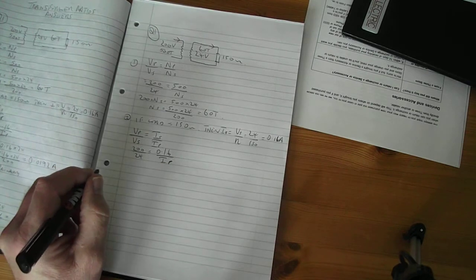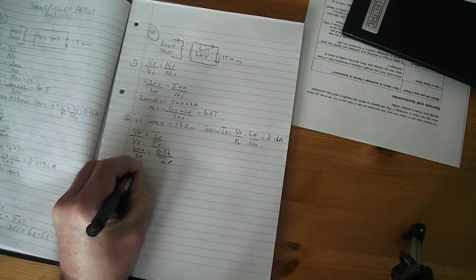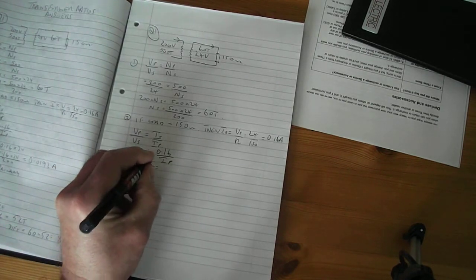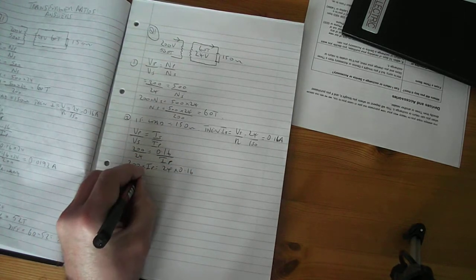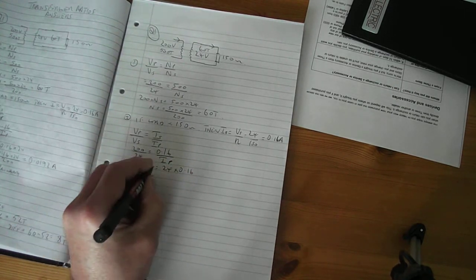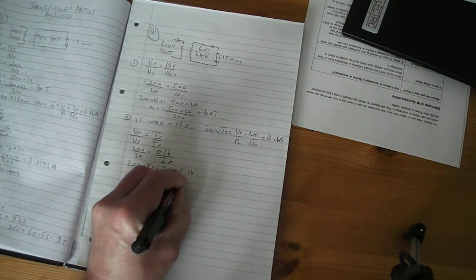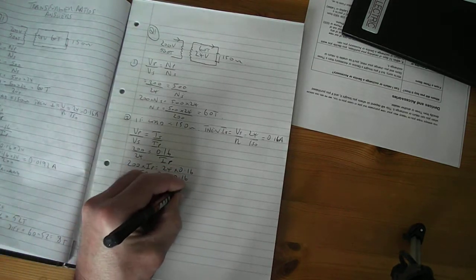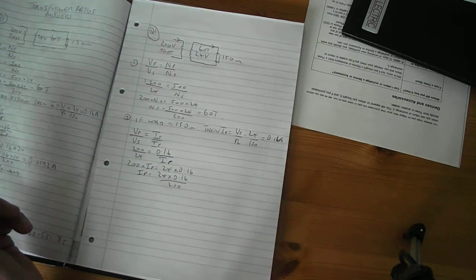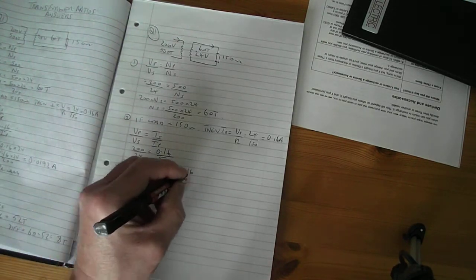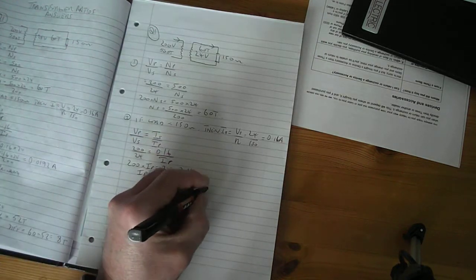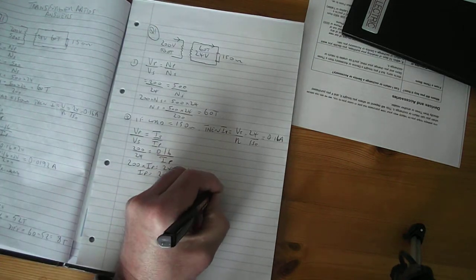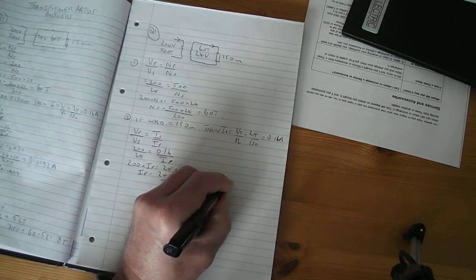So now we need to cross multiply that. So 200 times I primary equals 24 times 0.16. So I primary equals 24 times 0.16 divided by 200. And that comes, on your calculator, that comes to 0.019 of an amp.